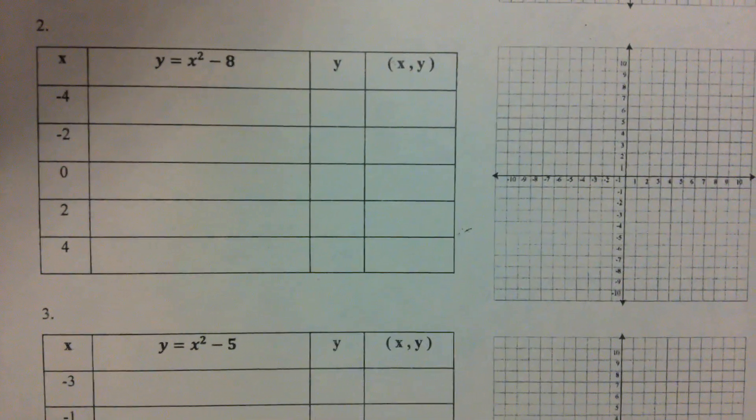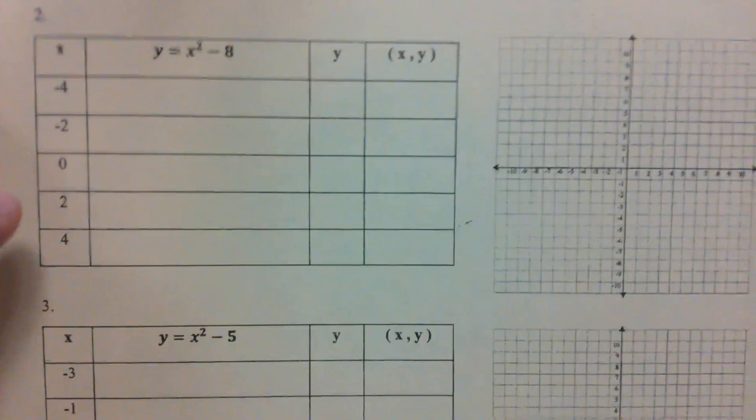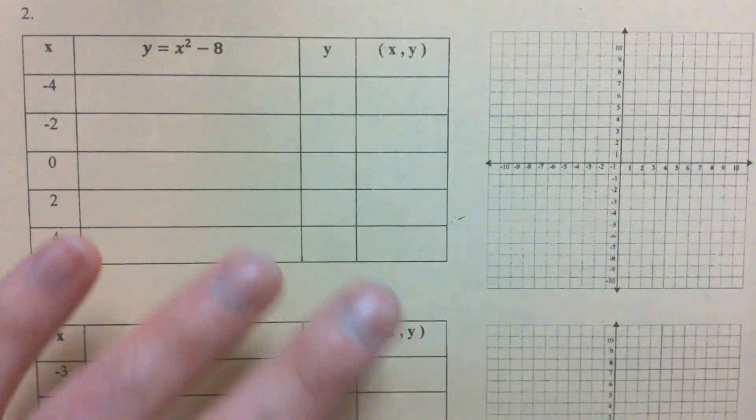Number 1 is pretty simple. We're going to go down to number 2. Number 2, we've got x squared minus 8.